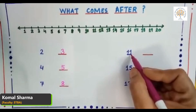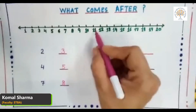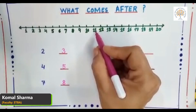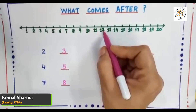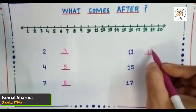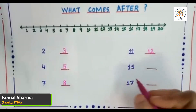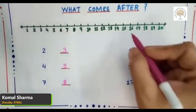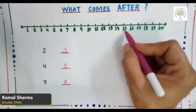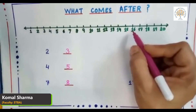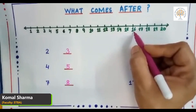Now we will see what comes after number eleven. Look at the number line — here is number eleven, and what comes after number eleven? Number twelve. Now tell me what comes after number fifteen? Yes, it is number sixteen.